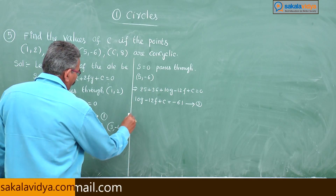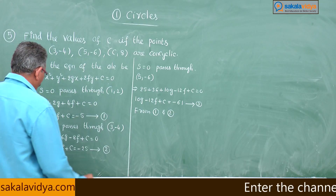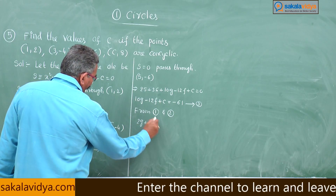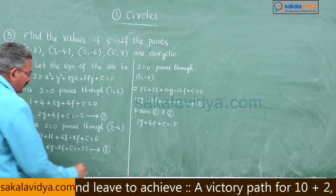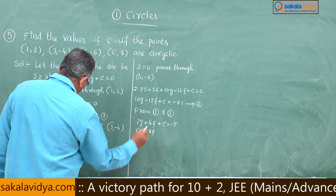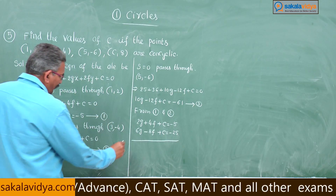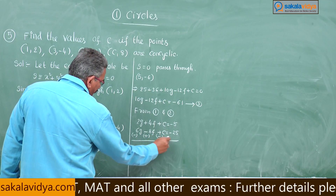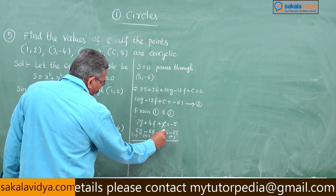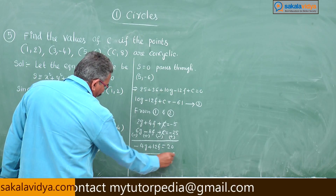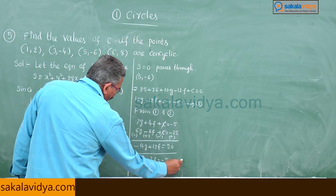From Equations 1 and 2, subtracting Equation 1 from Equation 2: (6g − 2g) + (−8f − 4f) = −25 − (−5), giving −4g + 12f = 20. Dividing by −4: g − 3f = −5. Call this Equation 4.